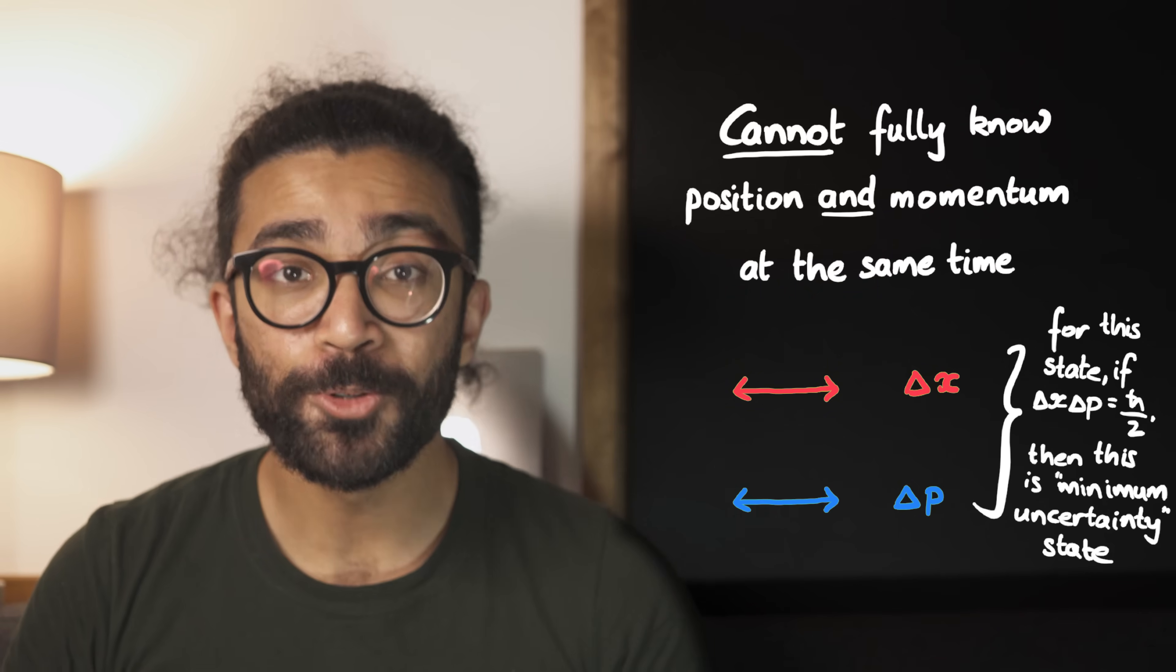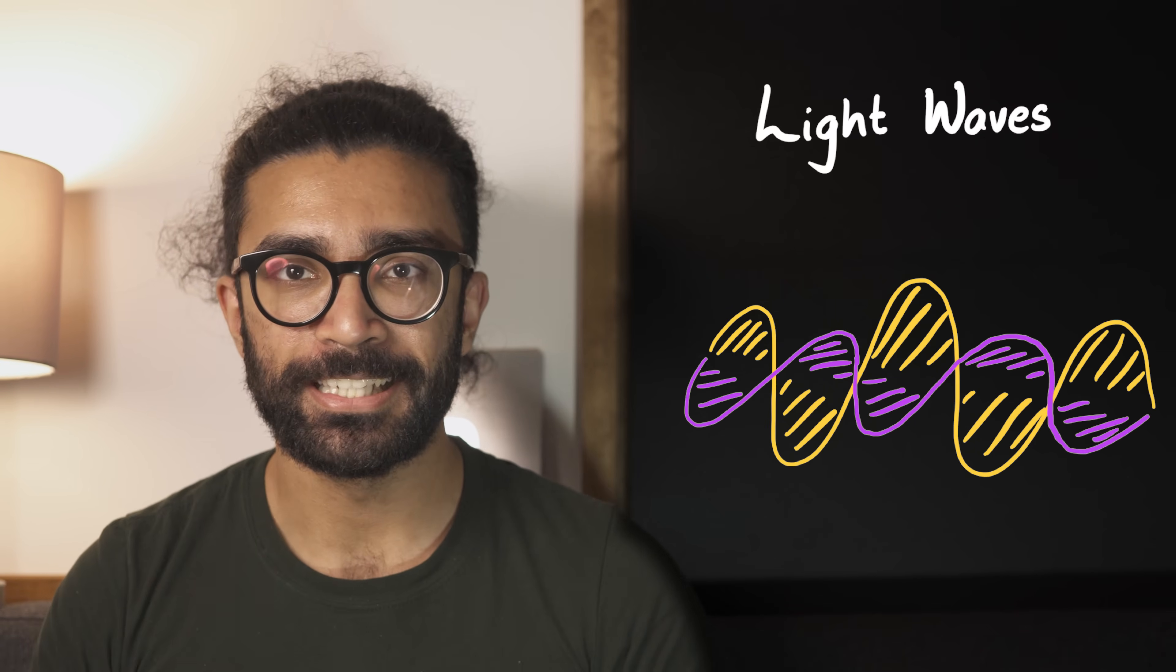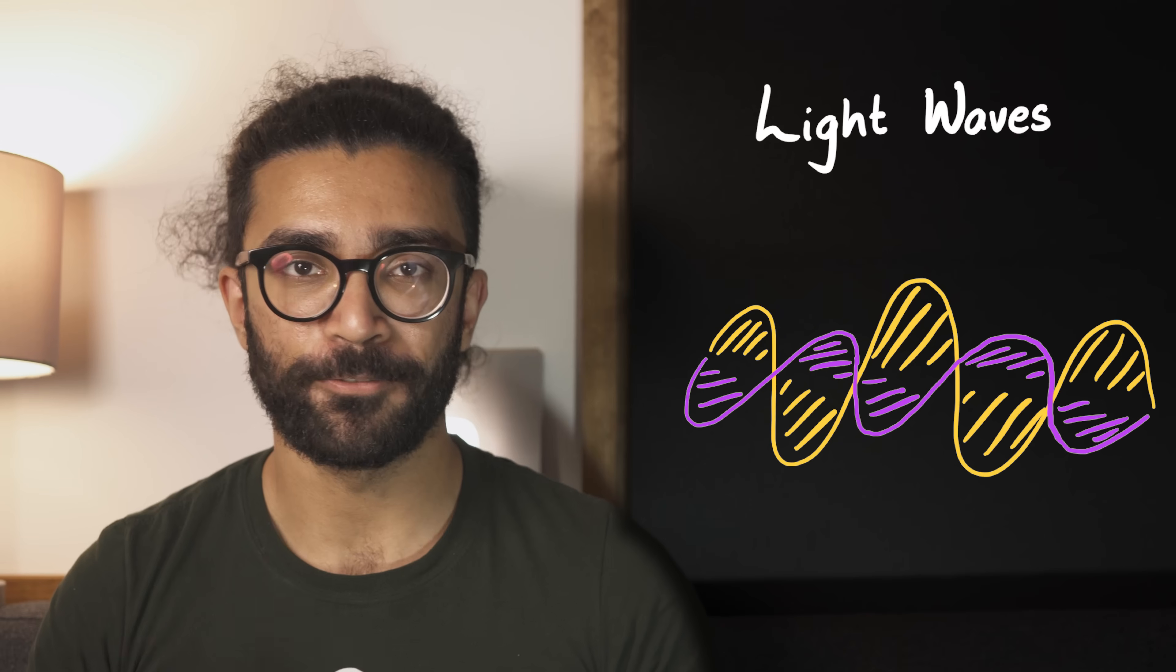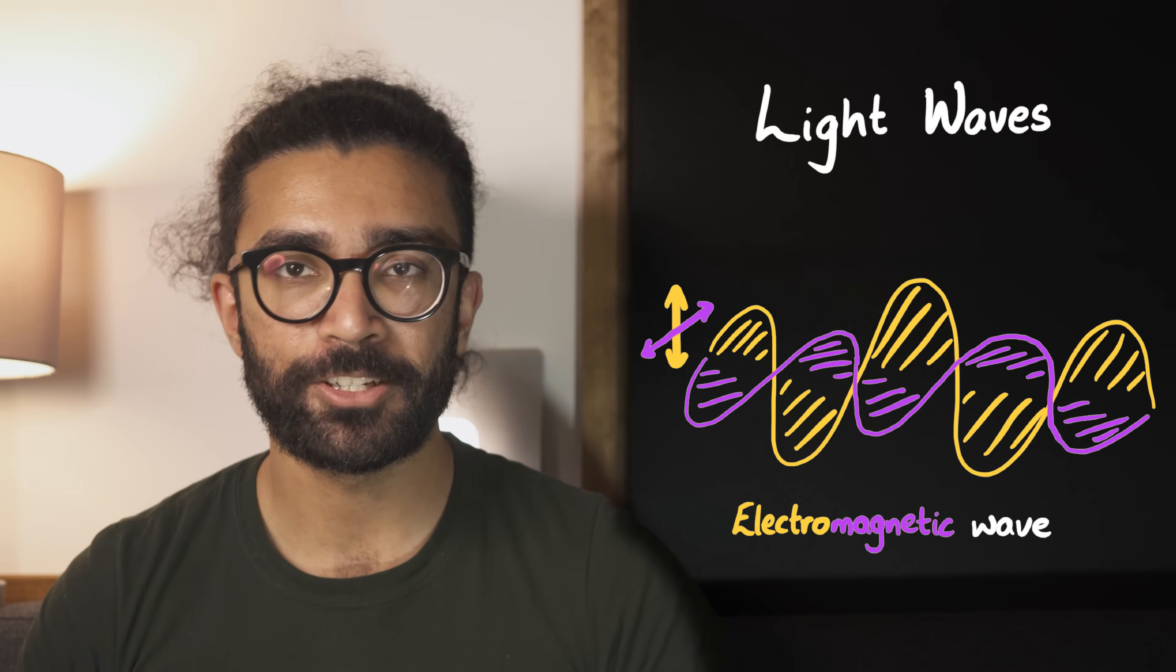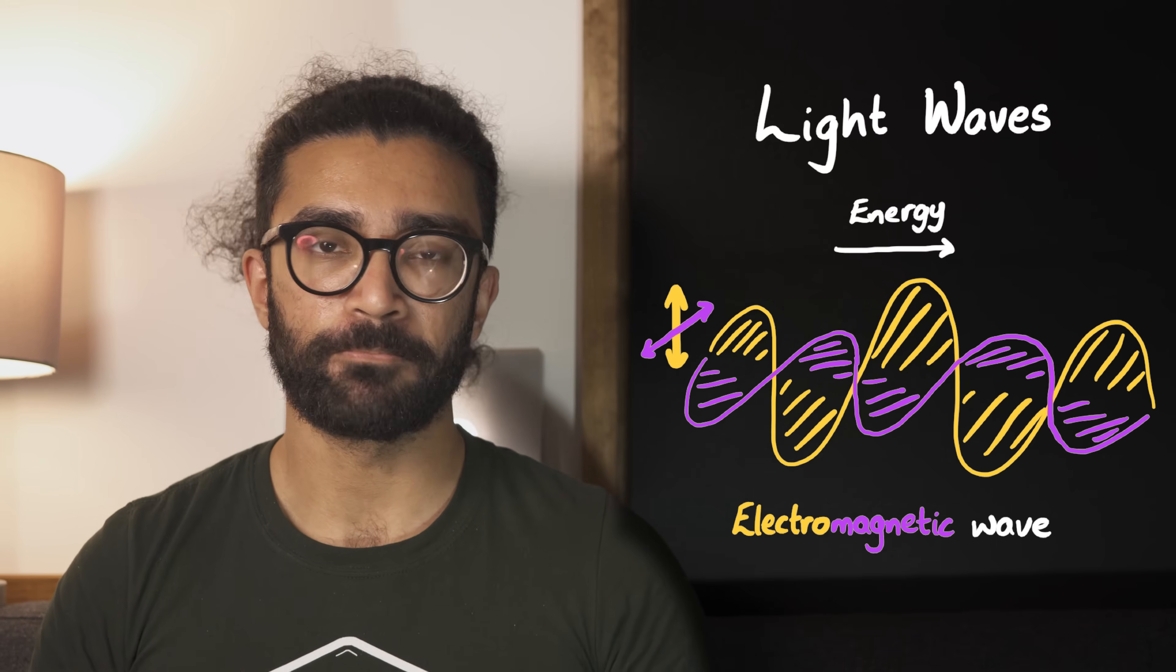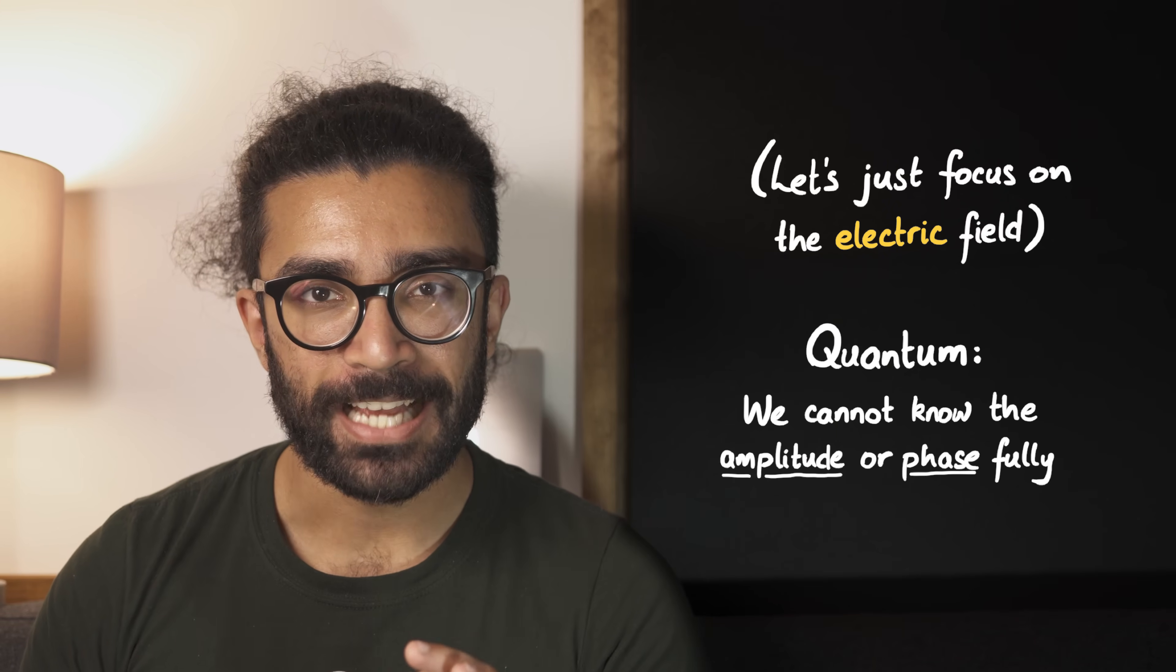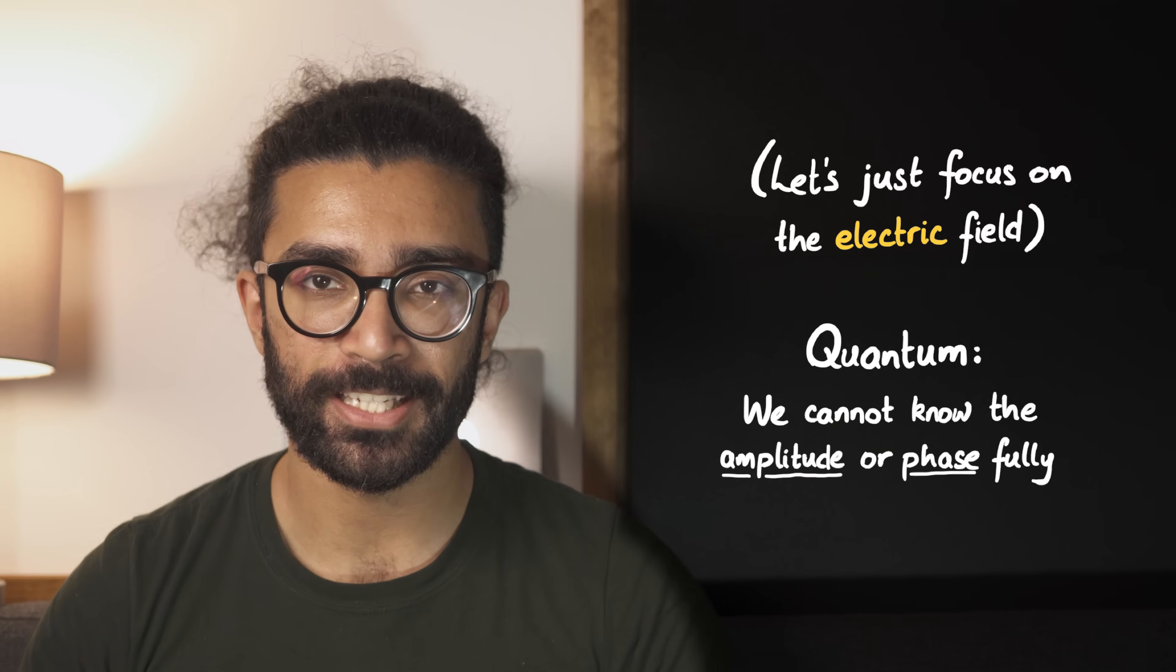Now, a similar sort of thing also applies to the properties of a light wave. You may be familiar with the idea that light waves can be thought of as vibrations of the electromagnetic field. The field wobbles in this direction, and the wave transfers energy from left to right in this instance. But in quantum theory, it turns out this picture of an electromagnetic wave, or light, becomes too simplistic. It turns out we cannot exactly know the amplitude or the phase of a light wave in quantum mechanics.